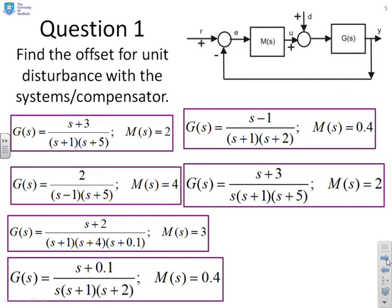Question one. You'll see you're given six different examples — six different pairs of a system and a compensator. Assuming the disturbance is a unit step, find the impact on the steady-state output of this disturbance. Pause now, try these questions by yourself, and then I'll proceed and go through the solutions.